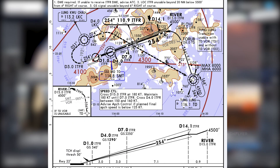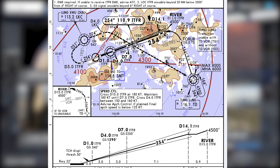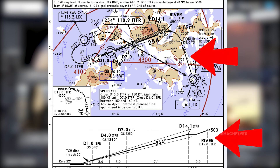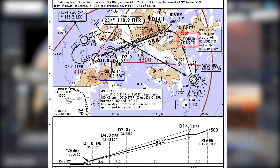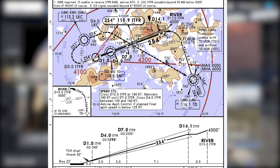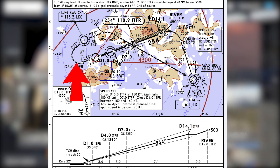This is quite a simple yet complicated approach over Hong Kong. For the profile, it's fairly straightforward: we cross Tango Delta between 8,000 and 6,000 feet, then proceed to position Toru before commencing a left turn to River, where we establish on the localizer and glide slope. We descend to 4,500 feet by position River, then continue descending via the 3-degree glide slope. The dotted line on the chart is the missed approach procedure for Runway 25 Right.